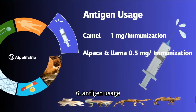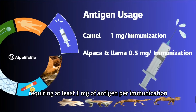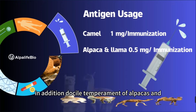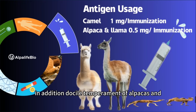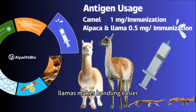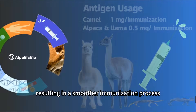6. Antigen Usage: Adult camels weigh between 300 to 1,000 kg, requiring at least 1 mg of antigen per immunization, whereas alpacas and llamas require 0.5 mg. In addition, the docile temperament of alpacas and llamas makes handling easier, resulting in a smoother immunization process.